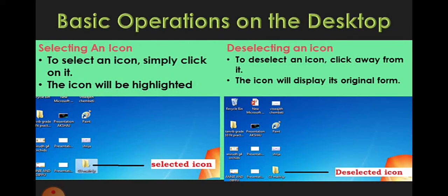Then, basic operations on the desktop and how to operate the start button. Selecting an icon: to select an icon, simply click on it and the icon will be highlighted. Deselecting an icon: to deselect the icon, click away from it and the icon will display its original form.